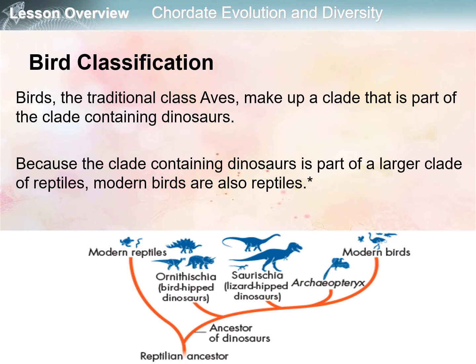How do we classify birds? The traditional class Aves makes up a clade — a group of organisms consisting of a common ancestor and all of its lineal descendants. This is part of the clade containing dinosaurs. Modern birds came from ancestors of dinosaurs, and because the clade containing dinosaurs is part of a larger clade of reptiles, modern birds are also considered reptiles.